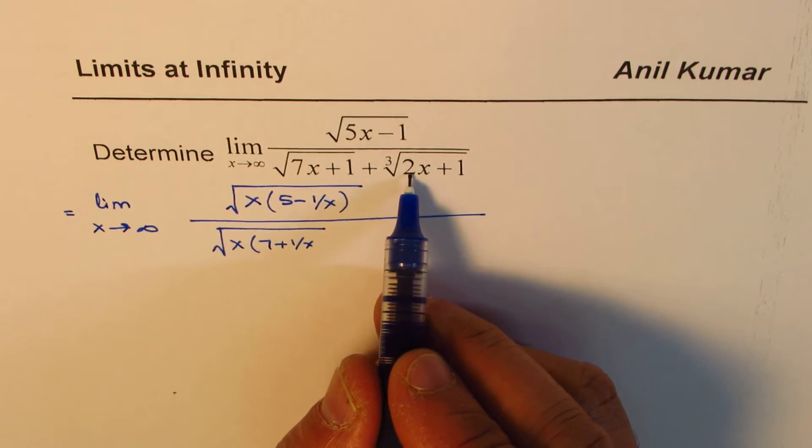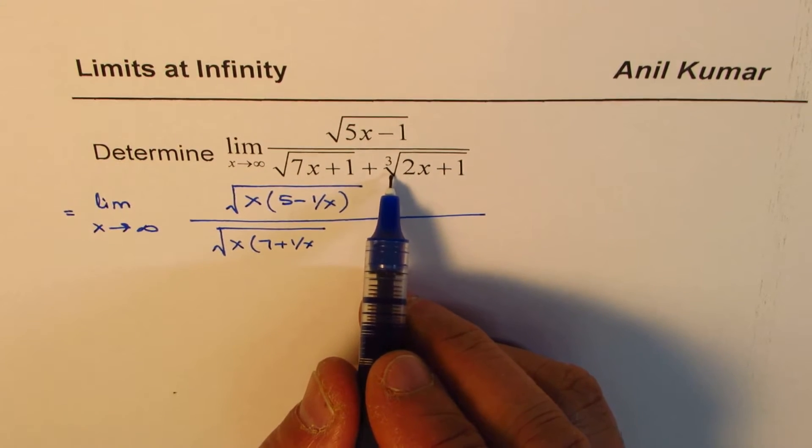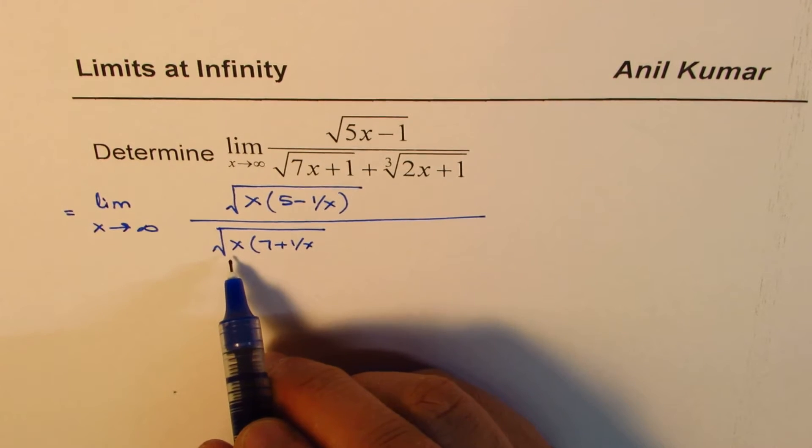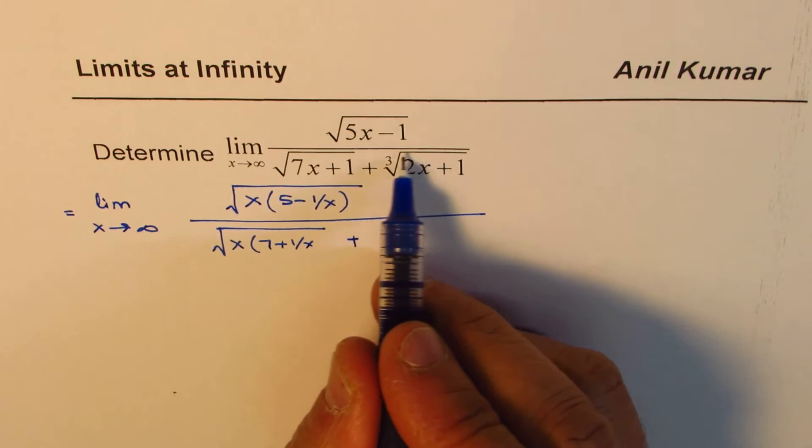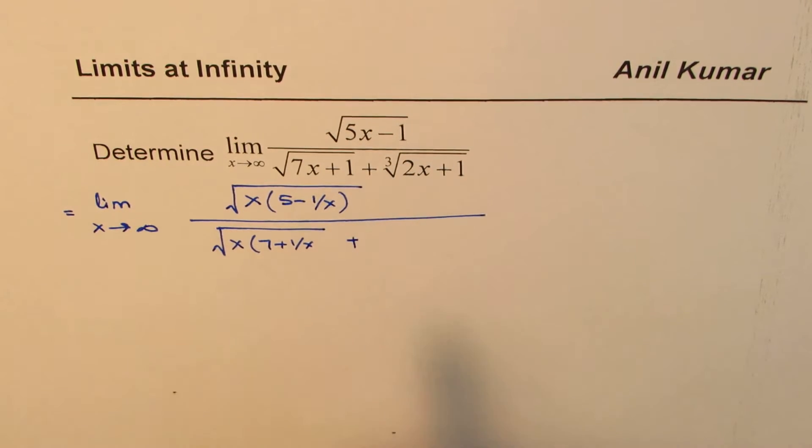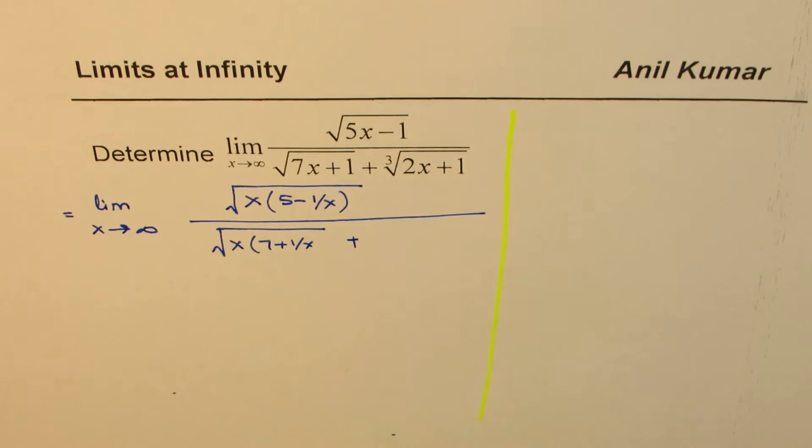Now if I take x common here, I get cube root of x common. Well, we actually want square root of x. Now that is the tricky part. So this portion has to be treated in a very different way. And that is what we are going to learn in this particular video. So how to write this portion? So that we could take square root x common.